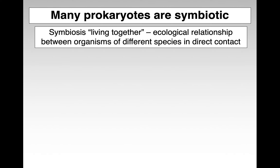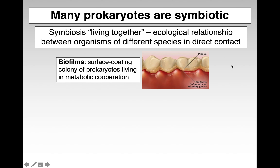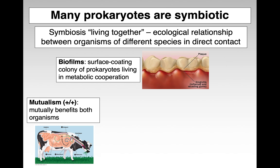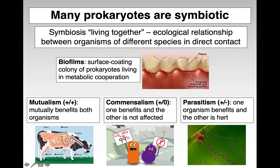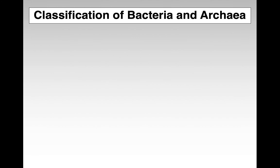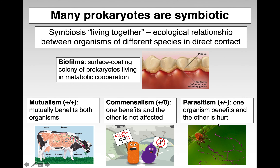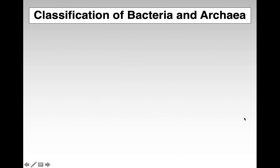Many prokaryotes are symbiotic, meaning they live together and have ecological relationships with other organisms — a good example is the plaque on our teeth. Symbiotic relationships can be mutualistic, benefiting both. They can be commensal, meaning only one benefits. And they can be parasitic, meaning one organism benefits and the other is hurt, as in Lyme disease, which is shown here.